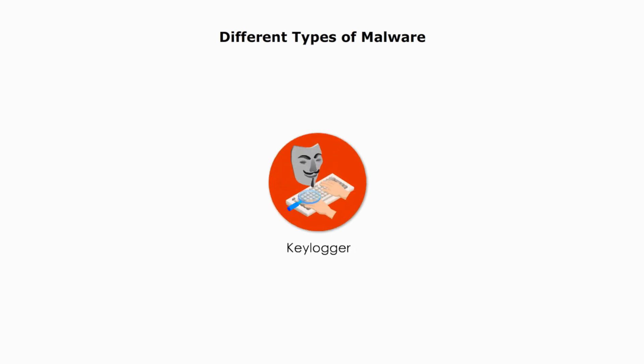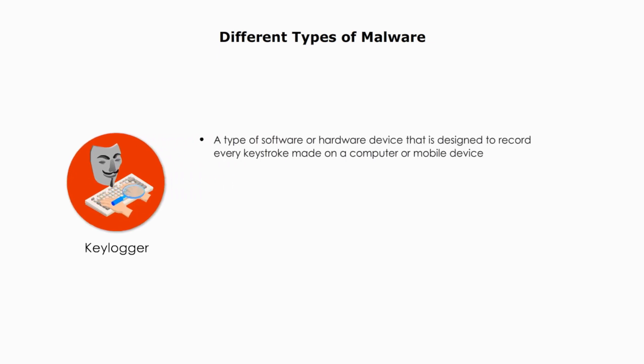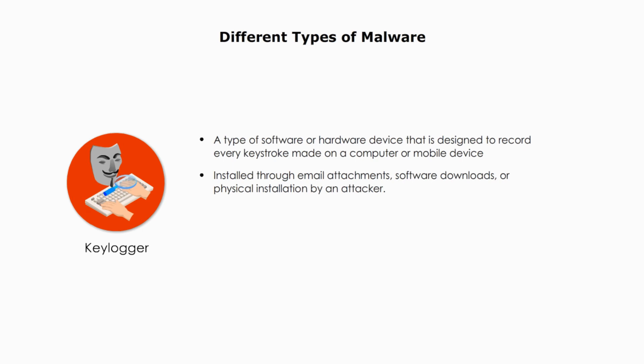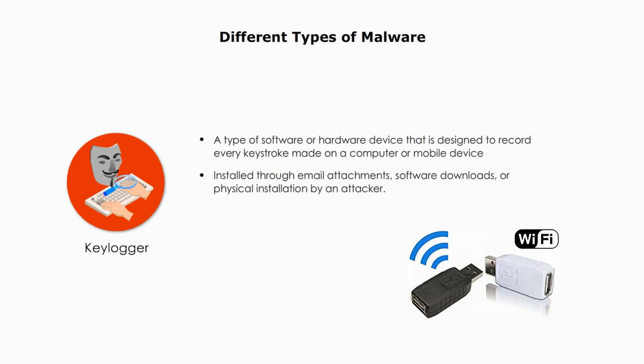A keylogger is a type of software or hardware device that is designed to record every keystroke made on a computer or mobile device. This can include sensitive information such as usernames, passwords, credit card numbers, and other confidential data. They can be installed through a variety of means, including malicious email attachments, software downloads, file downloads, or physical installation by an attacker. I want to emphasize an important matter: exercise caution when using a public computer. Take a moment to verify whether there is a USB flash drive connected to the machine, as keyloggers have the potential to capture and retrieve all the information you input.